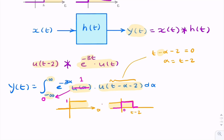So the effect of this second unit step has been to change this limit to t minus 2. And then we can simply replace the step function with the equivalent value one.